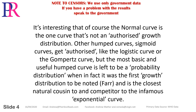It's interesting that the normal curve is the one curve that's not an authorized growth distribution. Other hump curves — sigmoid curves — get authorized, like the logistic curve or the Gomperts curve. But the most basic and useful hump curve is left to be a probability distribution, when in fact it was the first growth distribution to be noted, and is the closest natural cousin to and competitor to the infamous exponential curve.